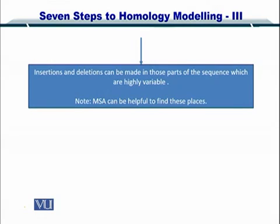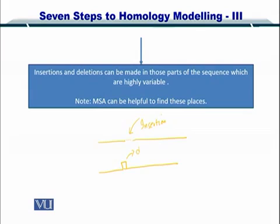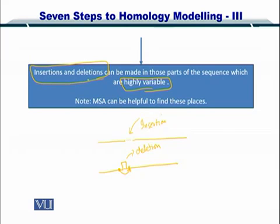Next are insertions and deletions — that is, insertion of an amino acid within a sequence. For instance, if you have an amino acid sequence with a gap, you need an insertion here to bridge this gap, or if you have an extra amino acid, you can have a deletion as well, connecting the backbone back again. These two things can only be done in regions of the protein which are highly variable. Insertions and deletions can only be done where variability in the protein sequence and structure is welcomed, and multiple sequence alignment can help you find these regions.